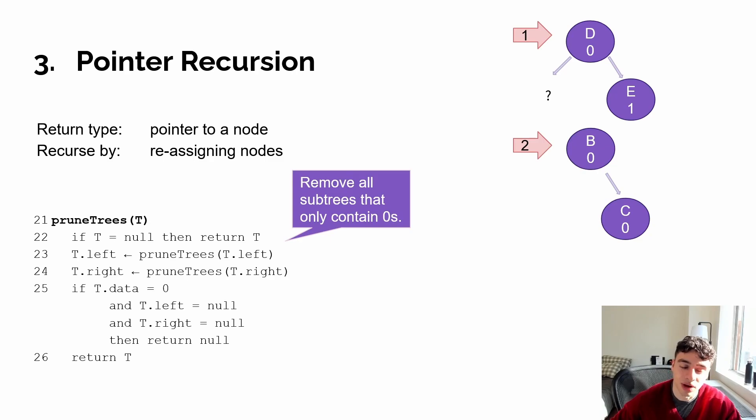Next, frame six would be opened on C, and B's right child would be pending the completion of frame six. Frame seven and eight would both return null, keeping C as a leaf child or a leaf node. And then since C is a leaf node and it contains only a zero, it would be returned as null. So B's right child would be assigned null.